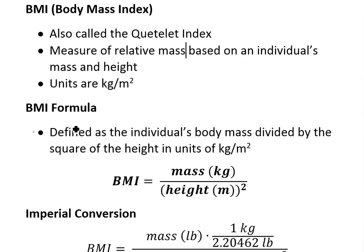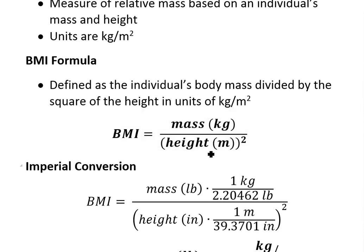BMI, the formula is defined as the individual's body mass divided by the square of the height in units of kilograms over meters squared. So, mass divided by height squared.